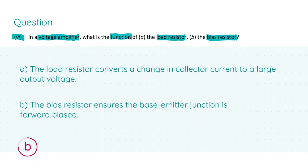In part six we're asked about the function of the load resistor and the bias resistor in a voltage amplifier. The load resistor converts a change in collector current to a large output voltage; the output voltage is taken across the collector and the load resistor. The bias resistor ensures the base-emitter junction is forward biased. Your first correct definition gets four marks and your second correct definition gets three marks.